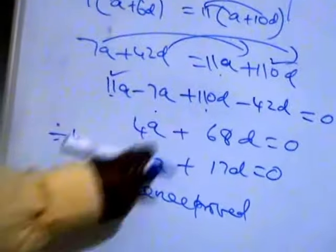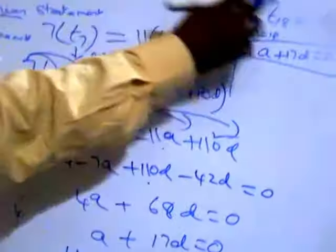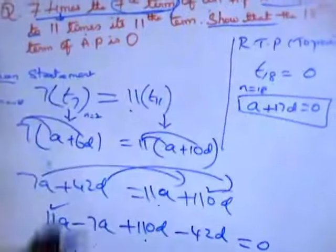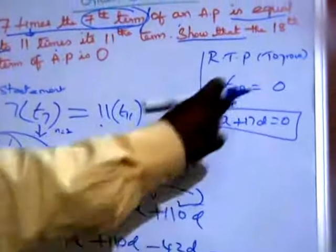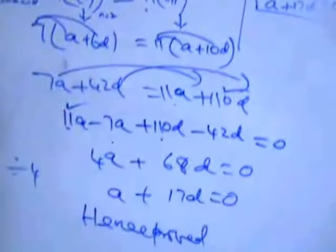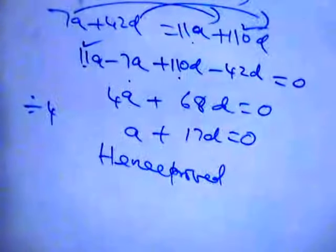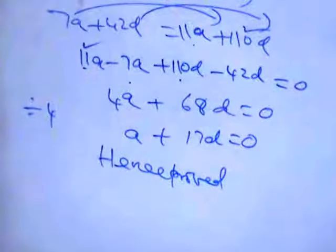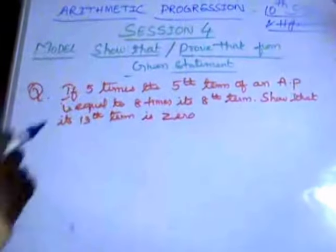From the given statement you must prove the required result. Write what is to be proved separately, then from the statement derive it — it's proved. We will do some more models.